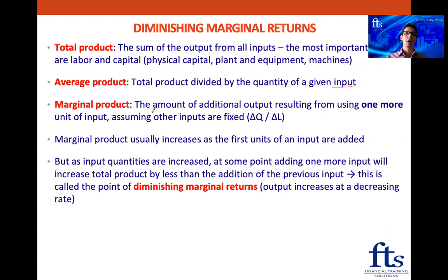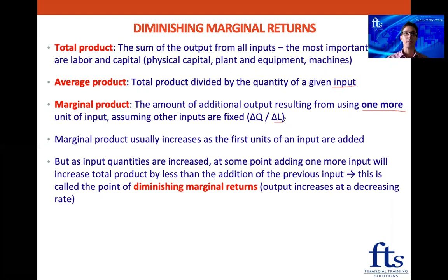And then the marginal product is the amount of additional output resulting from using one more unit of input — so how much more output is there if we add one more worker. We also assume other inputs are fixed, so we take the change in quantity by the change in the number of laborers. When we see the word marginal, we always think: one more.